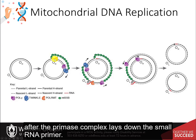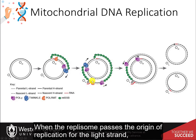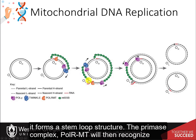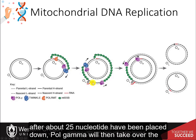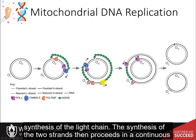You can see the twinkle helicase complex and polymerase gamma as it mediates replication after the primase complex lays down a small RNA primer. When the replisome passes the origin of replication for the light strand, it forms a stem-loop structure. The primase complex, pol-RMT, will then recognize the stem loop and lay down a primer at this region. After about 25 nucleotides have been placed down, pol-gamma will then take over the synthesis of the light strand.